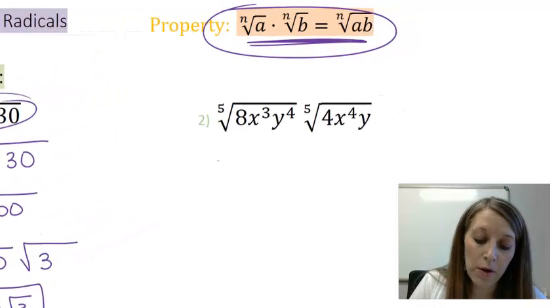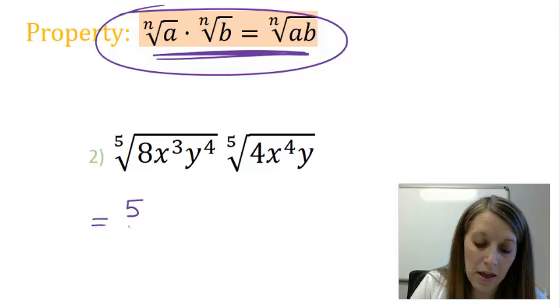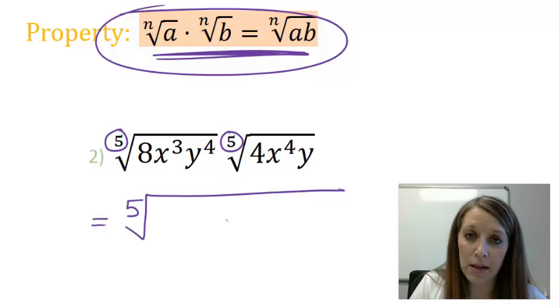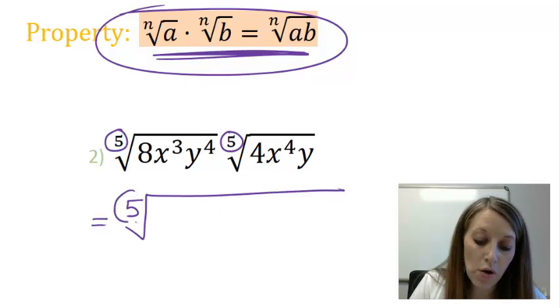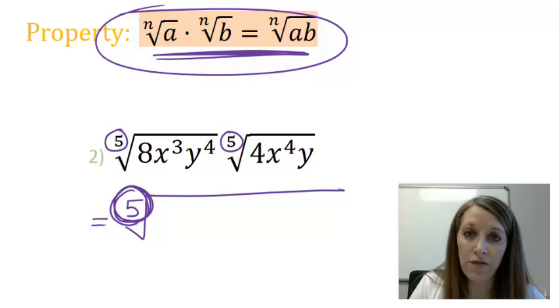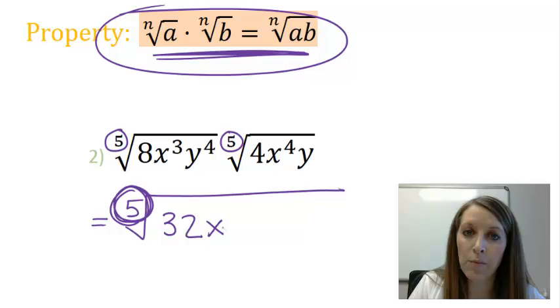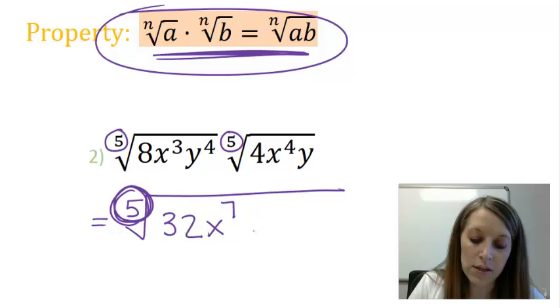So the first thing that I'm going to do is actually put these together in one big root. Now these are both fifth root, which means I can combine them since they match, which means don't forget to include the fifth root down here. Just multiply them. 8 times 4 gives me 32. X cubed times X to the fourth goes back to my exponent properties where I add the exponents, X to the seventh. And Y to the fourth times Y gives me Y to the fifth.